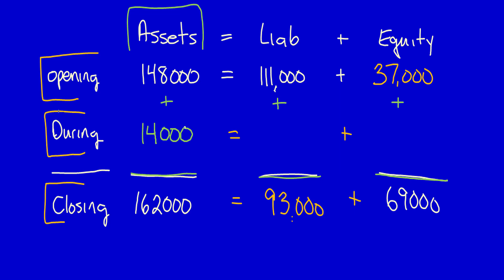$93,000 minus $111,000 is equal to negative $18,000. $69,000 minus $37,000 is equal to $32,000. So we've solved for every unknown number.